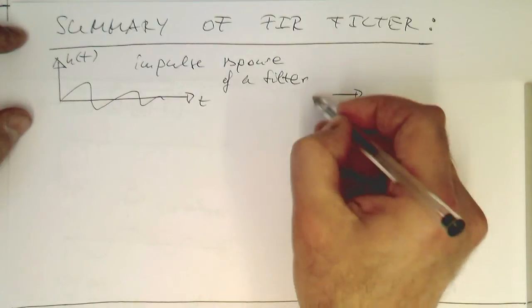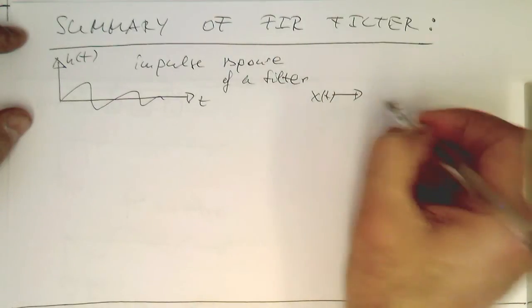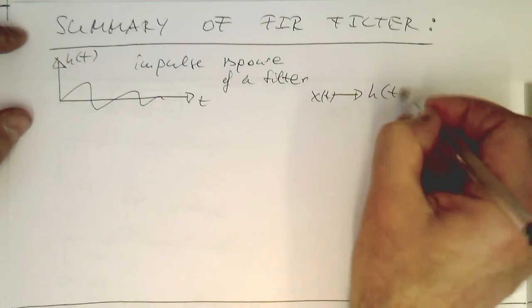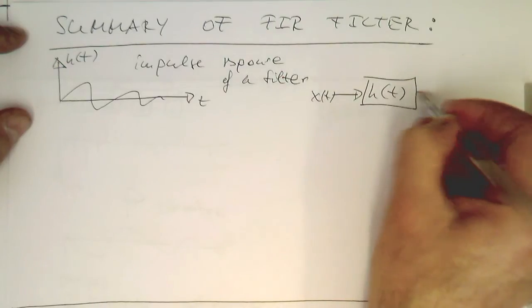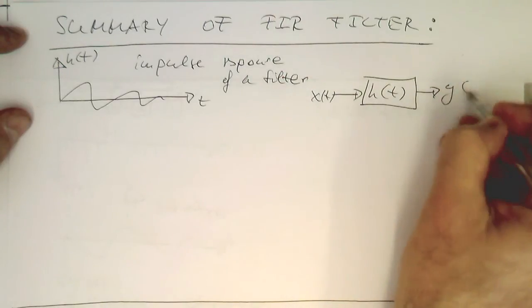We've got our signal X, and this goes into a filter H and generates an output Y.